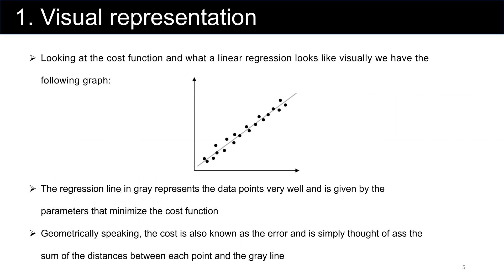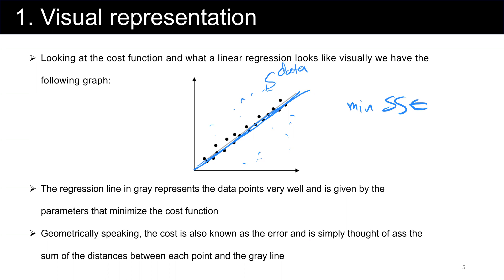Now let's look at the visual representation. Looking at the cost function and what linear regression looks like, we have a set of points that are our input data. We want to find the best linear function whose distance from all of these points is minimum — the best fit among these points. The regression line in gray represents the data points very well and is given by the parameters that minimize the cost function. Minimizing the error gives us theta zero and theta one, which define the regression line. Theta zero is the intercept and theta one is the slope.